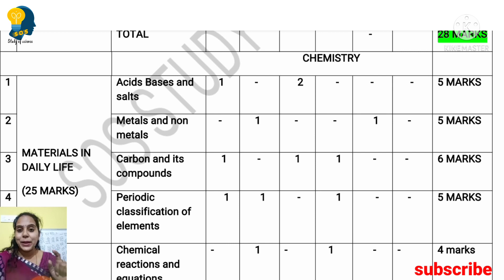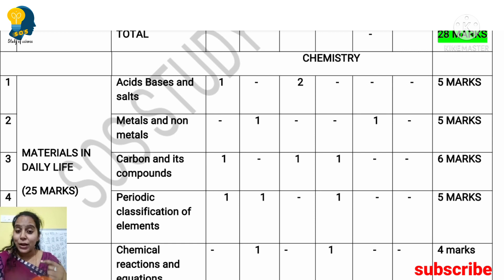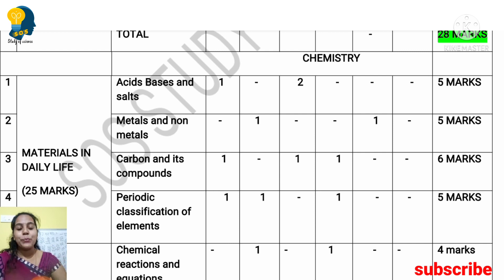Acids, Bases and Salts lesson carries a total of 5 marks — there may be a 1-mark variation, so it could be 4 or 5 marks. Based on previous papers, 5 marks is the expectation. Metals and Non-Metals lesson also carries a total of 5 marks.